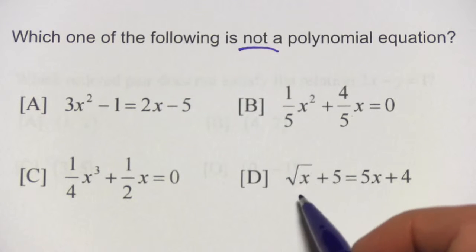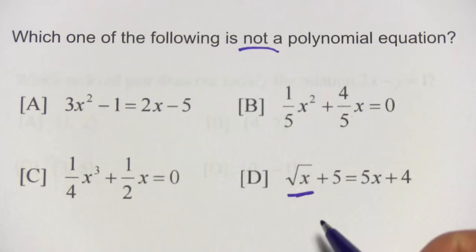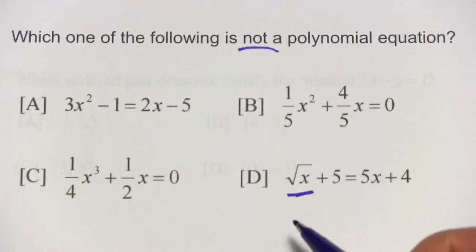In d, we've got a little bit of an oddball here. We've got a square root instead of x to the first, the second, the third. This makes it not a polynomial equation. This makes it a different kind of equation. So that's something to look out for in these problems.